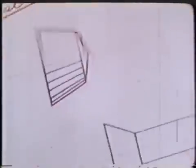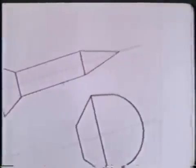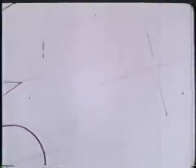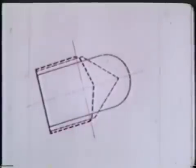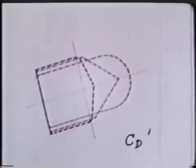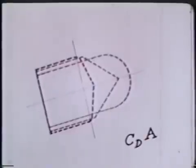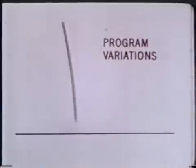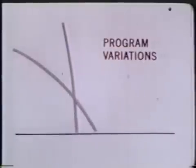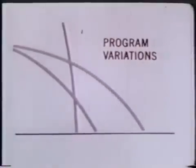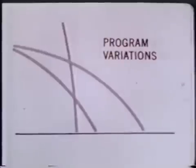He can fight these enemies on two possible fronts. First, on the design front, by modifying the vehicle's shape and size relative to its weight — in other words, its ballistic coefficient. And second, on the program front, by altering the vehicle's trajectory, its velocity, its attitude, and its angle of entry into the Earth's atmosphere.